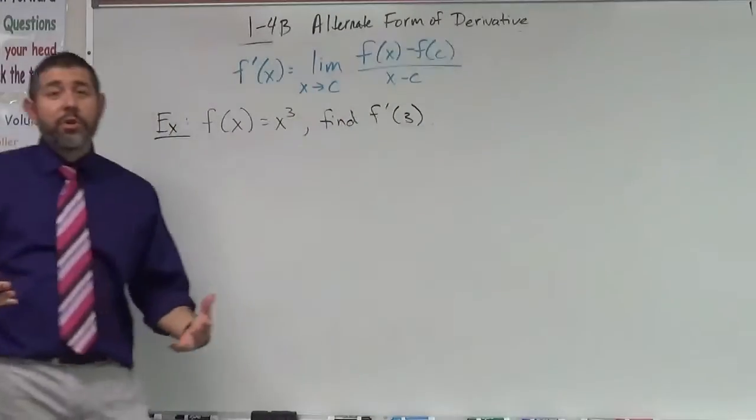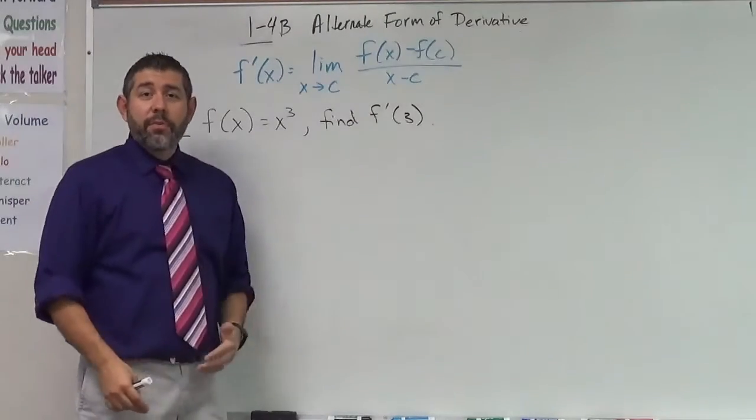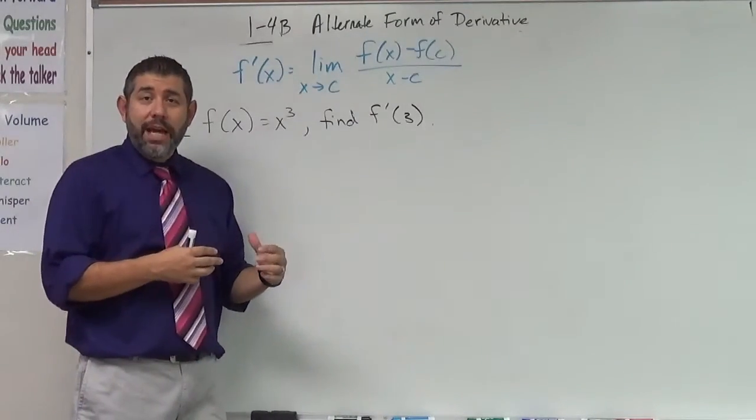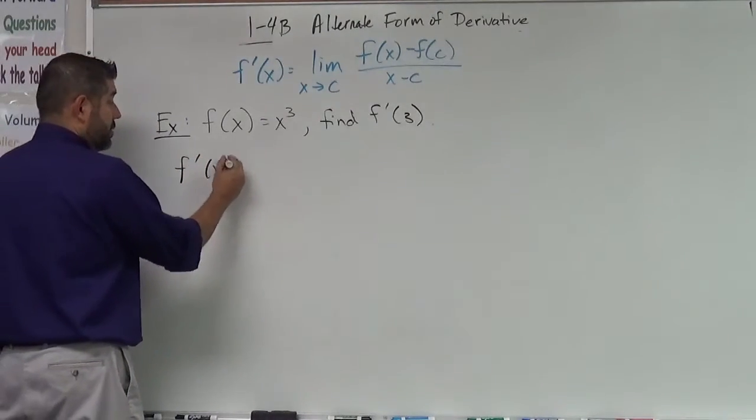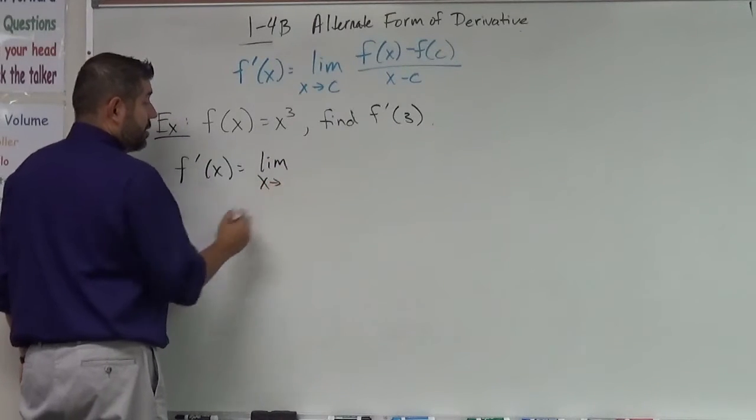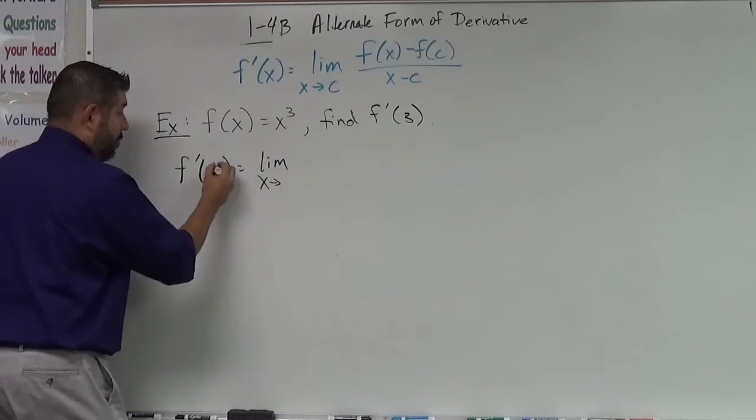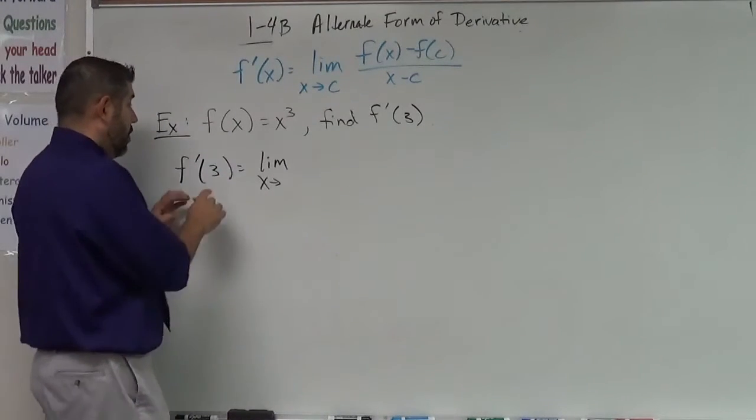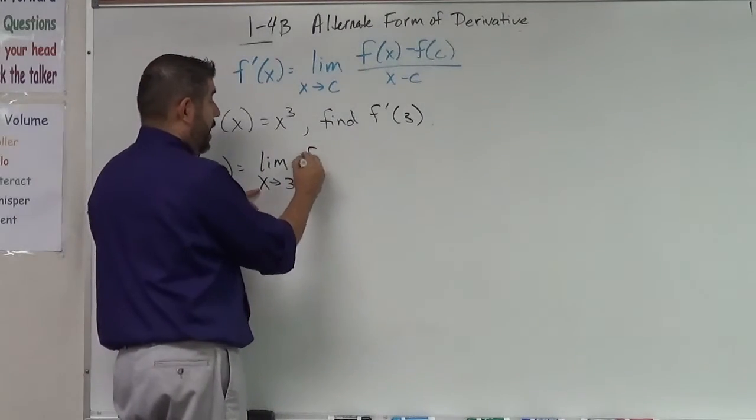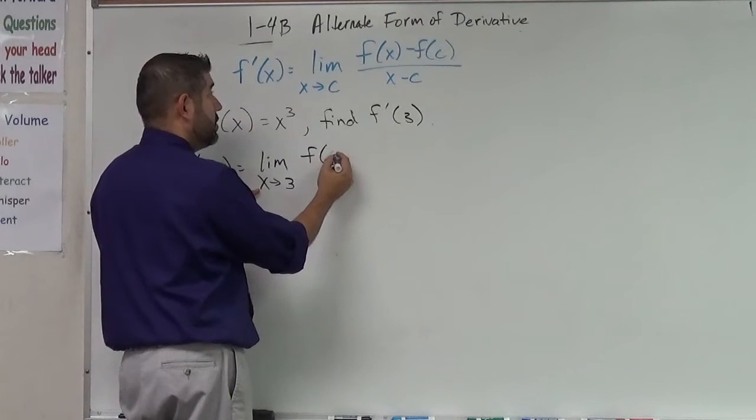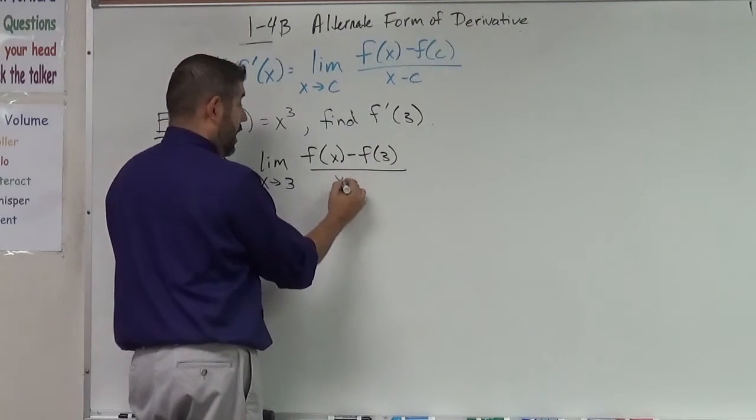Back here with our one example for this video f of x is equal to x cubed and we're going to find f prime of 3. We're going to use the alternate form of that derivative. So we're going to go ahead and set up our limit. First we're going to do f prime of x and we're going to have the limit as x approaches, well actually we can do this right away. So we want f prime of 3. So that means we're going to go the limit as x approaches 3 of f of x minus f of 3 all over x minus 3.